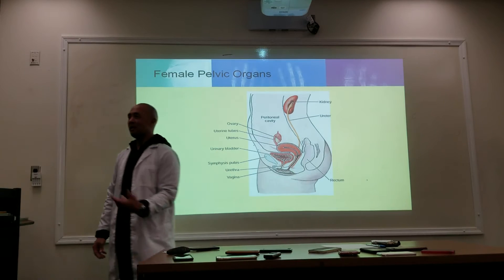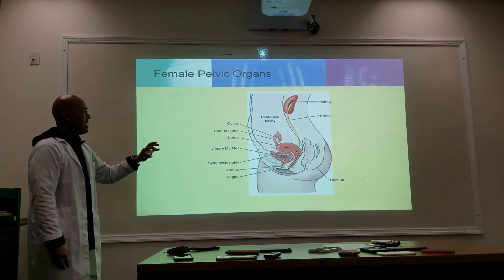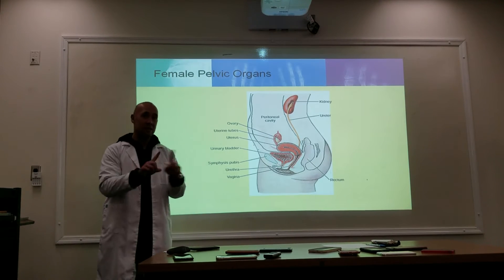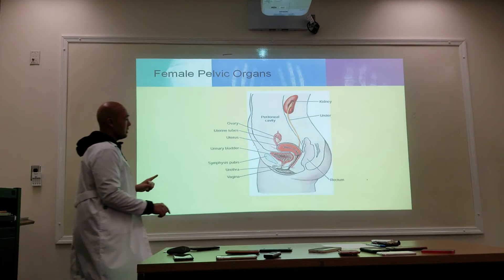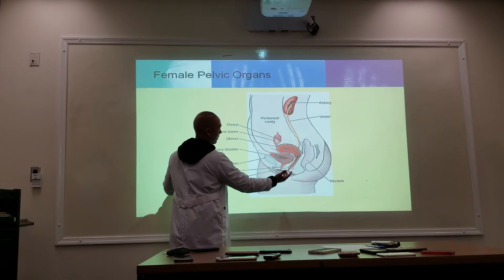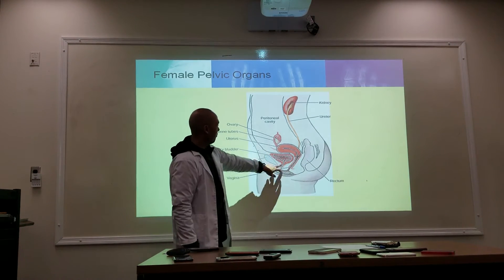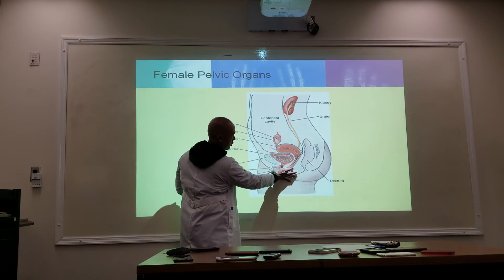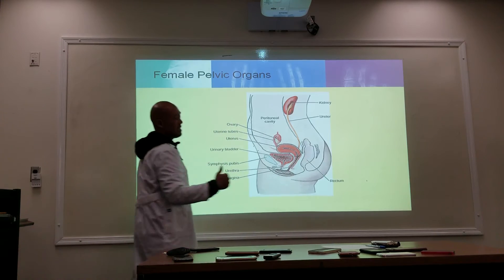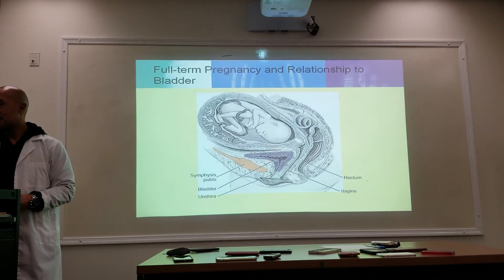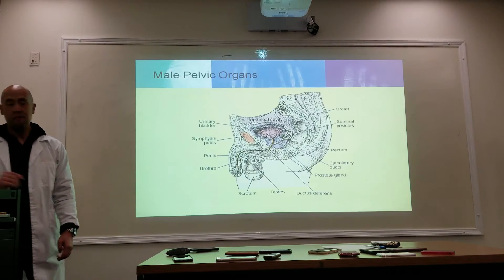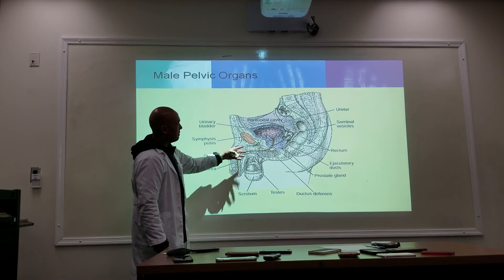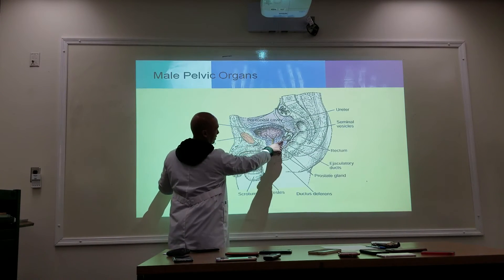The difference between male and female: in females, the reproductive portion and the urinary portion are two separate entities with two different outputs — a urethra for the urinary system and a vagina as a separate canal. In the male, the urethra is shared by both the urinary system and the reproductive system.